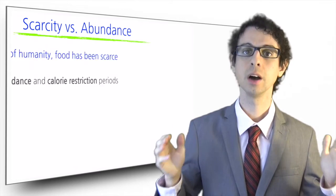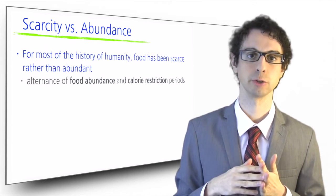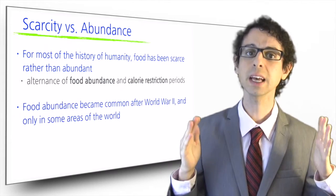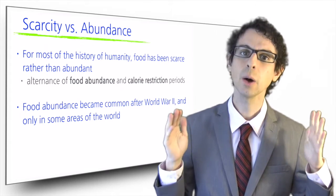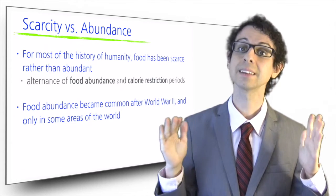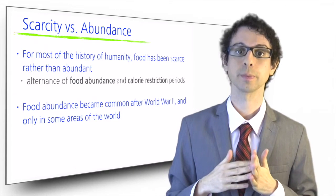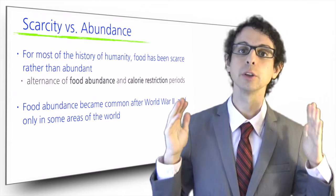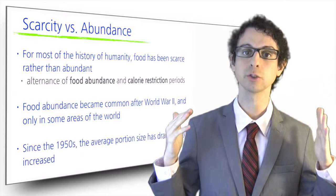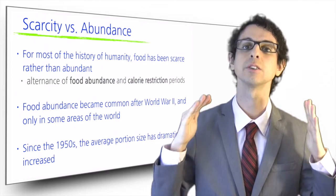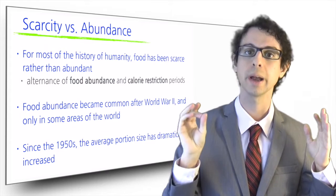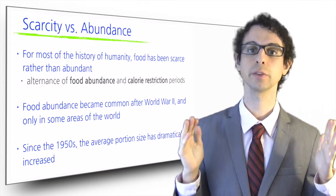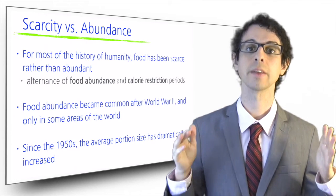Up until a few decades ago, food abundance has never been a problem in human history. The problem we had to deal with was scarcity, if not famines. Food abundance became common really only after World War II, and only in some areas of the world. Until the Industrial Revolution, food abundance was the privilege of a selected few. Our average portion sizes have increased dramatically compared to the 1950s. Before that, and for most of the history of humanity, food has been scarce rather than abundant.